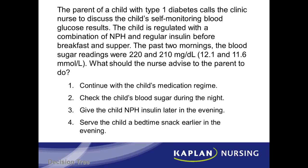So we have one assessment — that is number two — and we have three implementations: numbers one, three, and four. Because that's the pattern I see, and critical thinking is about seeing patterns, I'm going to go back into the stem and read. What I do know is the blood sugar readings were 220 and 210 — that's objective information — and I know that the client is hyperglycemic.